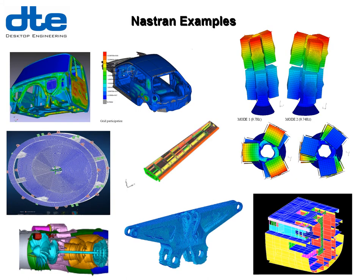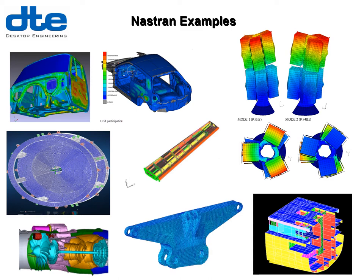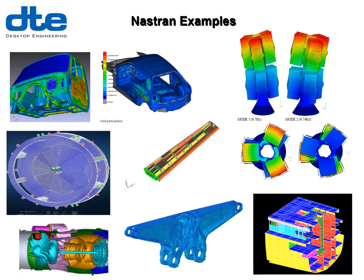Some Nastran examples — with automotive and aerospace heritage — include aerostructures, satellites, marine customers modelling ships and boats, and industrial machinery like fans and impellers. Optimisation is a strong feature in Nastran: it's not just limited to topology — we can do shape, topography, and topometry optimisation as well.